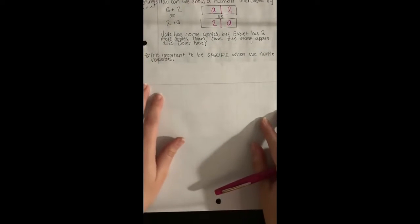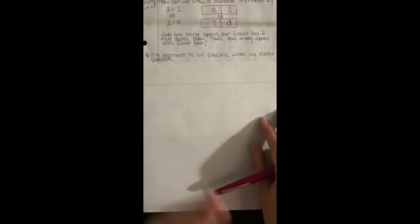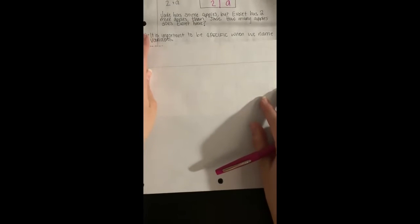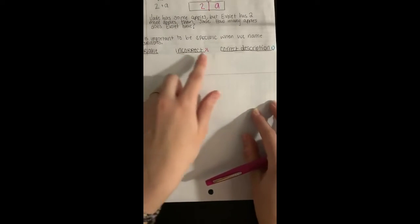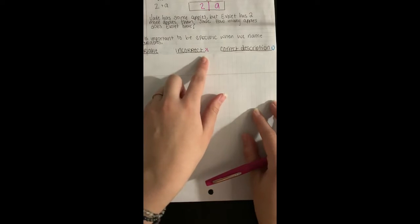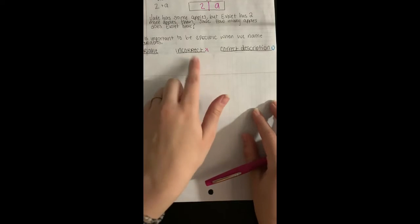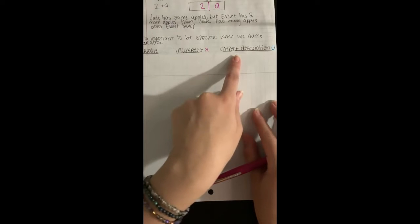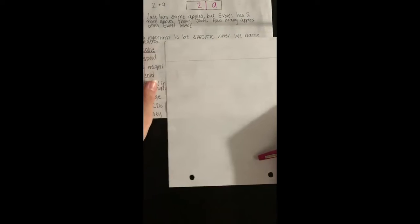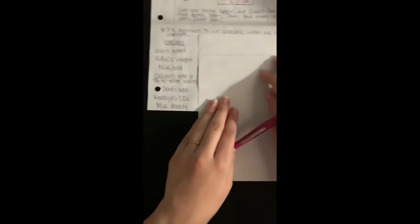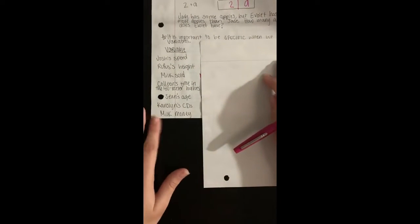It is important to be specific when we name variables. So I'm gonna have you write down this table. We're gonna have the variable, the incorrect way to name or describe the variable, and then the correct way to name or describe the variable. So we have these variables. You can see how I skipped lines. That's all the space that you'll need.